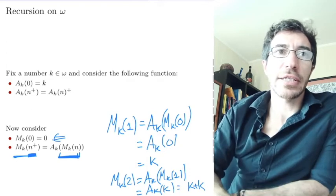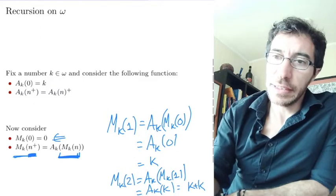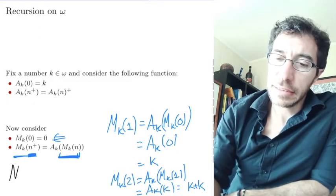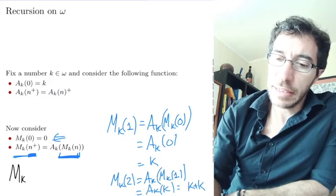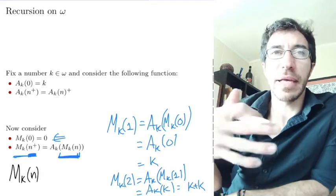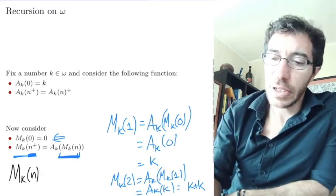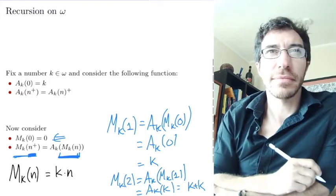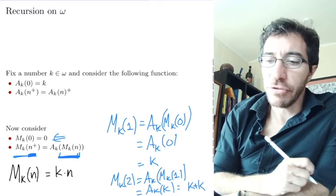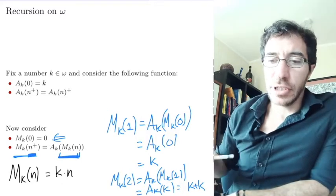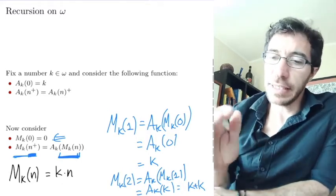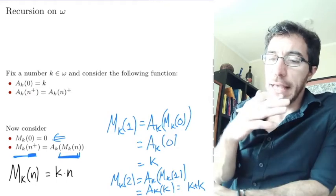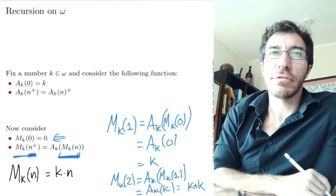All right, so you guys can guess from now that what you're going to get is that m_k at n, every time you apply one more, we add k. So we're going to get k times n. So that's a recursive definition of multiplication using addition. We're going to find addition using successor and multiplication using addition recursively.